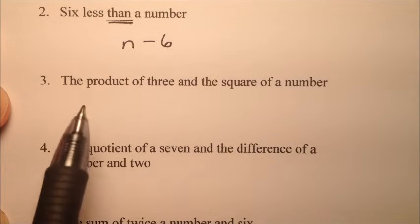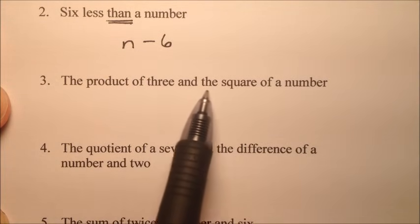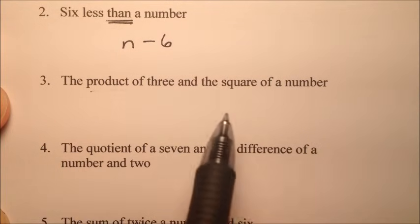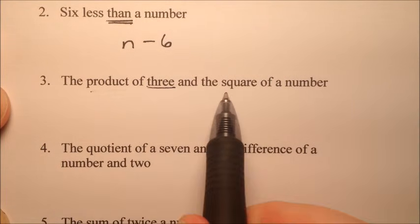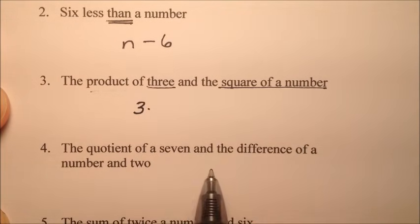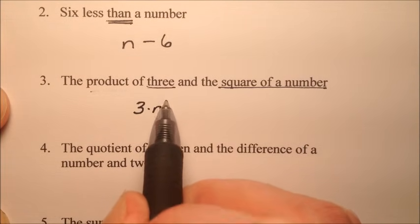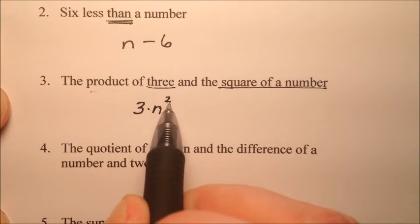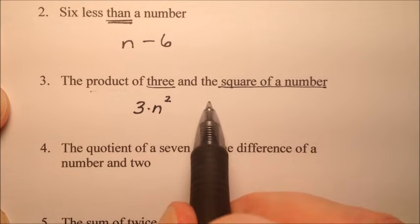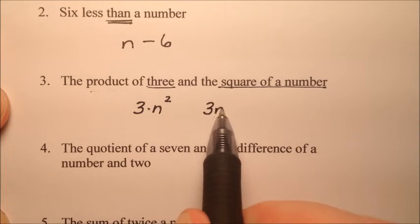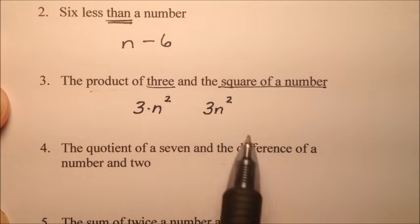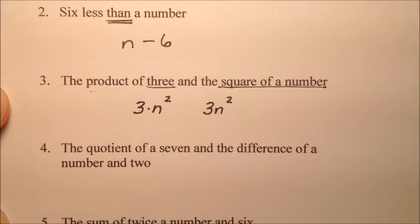For number three, we have the product of three and the square of a number. Product means multiply. We're multiplying three and the square of a number — the number squared. You can put a dot for multiplication, or you can just put them right next to each other, because that means multiplication. So three n squared is the product of three and the square of our number.